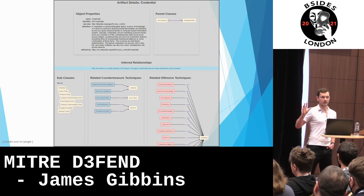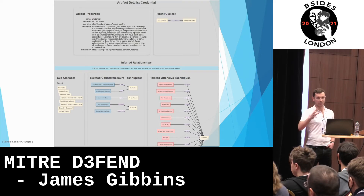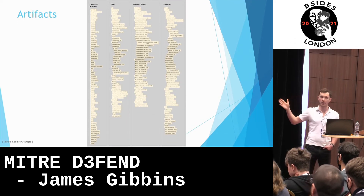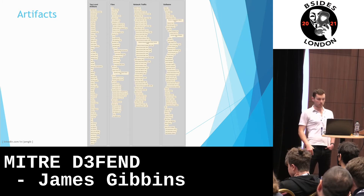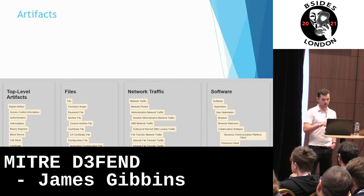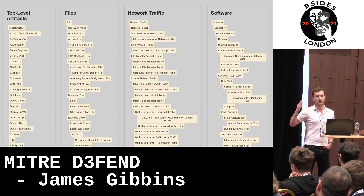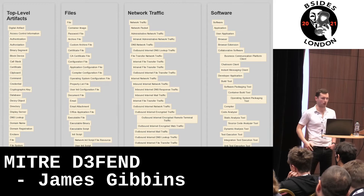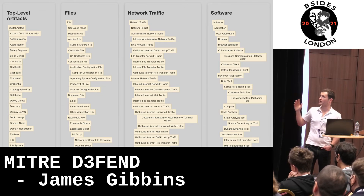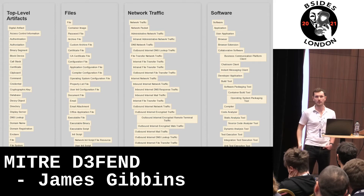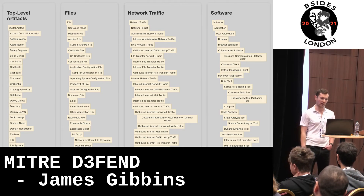Hopefully, by now you're starting to see how the Defend framework, with its countermeasures and artifacts, and the well-established ATT&CK framework can work together to strengthen your defenses. Going to artifacts — this is the total list as they are now: 232 of them. If we zoom in, you can see there are four categories: top-level, files, network traffic, and software. They're all quite self-explanatory — things like certificates, commands, files, emails, network packets, browser extensions — anything that could be left over from an attack, which could give you some idea of what's happened, what to look for next, and precautions to take in the future.